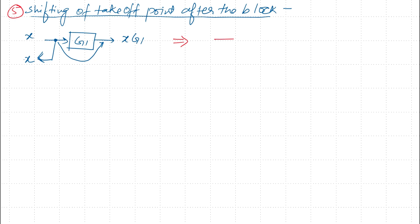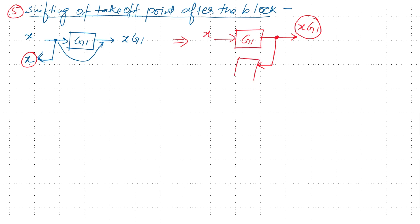In the equivalent diagram, this is the same block G1 with signal x applied to it; the output is x times G1, and the takeoff point is shifted to this output point. At this point the signal value is xG1, but we want the takeoff signal value to equal x. So we divide this value by G1 — there will be a block with gain 1/G1 — so that we get the same value x. The rule is: if you want to shift the takeoff point after the block, the signal is divided by the gain.